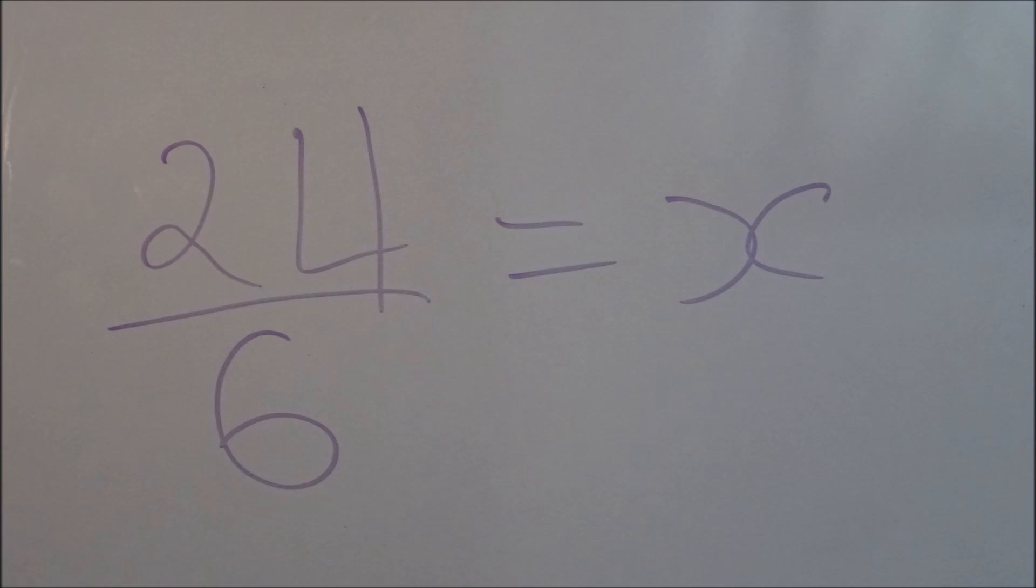Anyway, if you're trying to find, say, 24 over 6, that's the same as asking what when multiplied by 6 gives 24. And if you're trying to find 1 divided by 0, that's asking what, when multiplied by 0, gives 1.